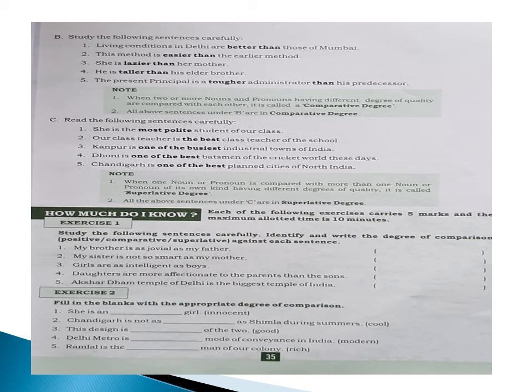Third sentence: 'This design is the better of two.' When we are selecting between two, we use comparative degree. So the answer is: 'This design is the better of two.'